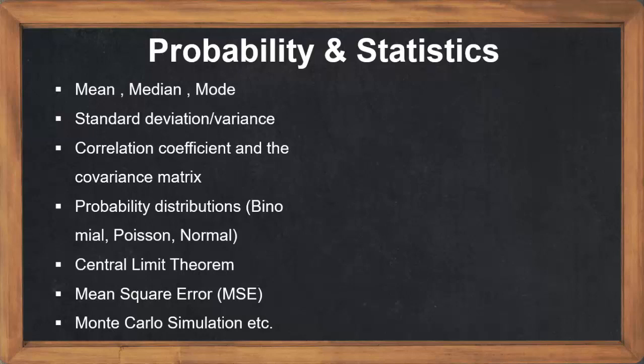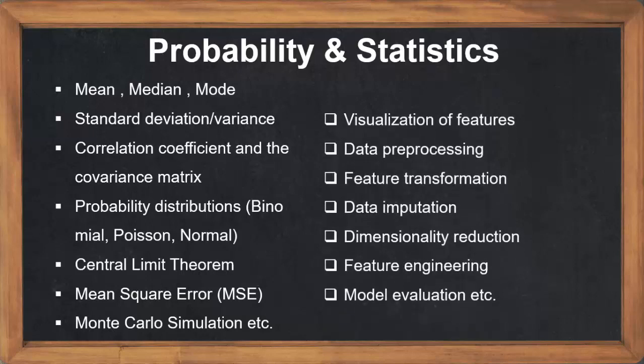These concepts we use a lot in AI projects, like visualization of features, data preprocessing, data imputation, dimensionality reduction, feature engineering, model evaluation, and we have so many areas where probability and statistics will be useful. I think now you understood how important mathematics plays a role in artificial intelligence.